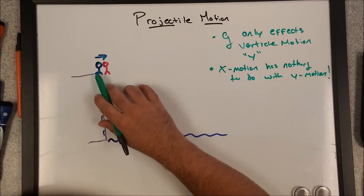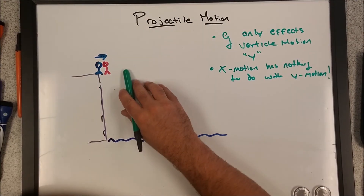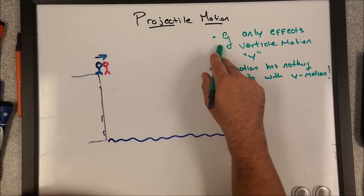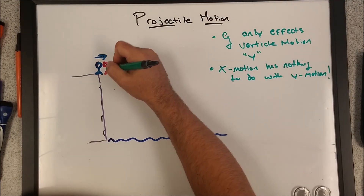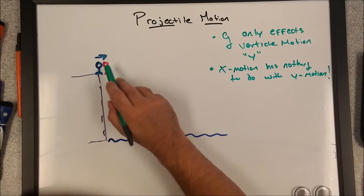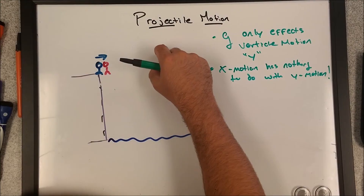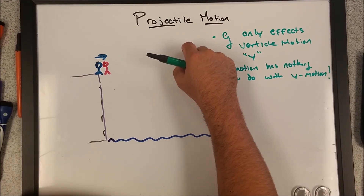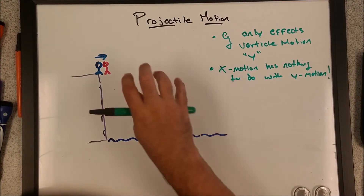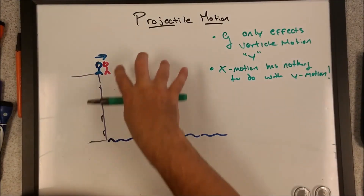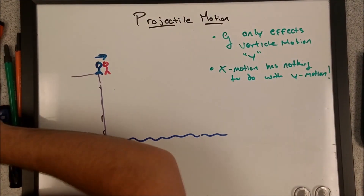If it did, it would be pretty wild — that would basically be implying that as this person runs out, gravity basically slows down or even stops to exist. So they're just out here running and then they realize it in the air and then fall down — you get that Looney Tunes effect. No, it's not happening.